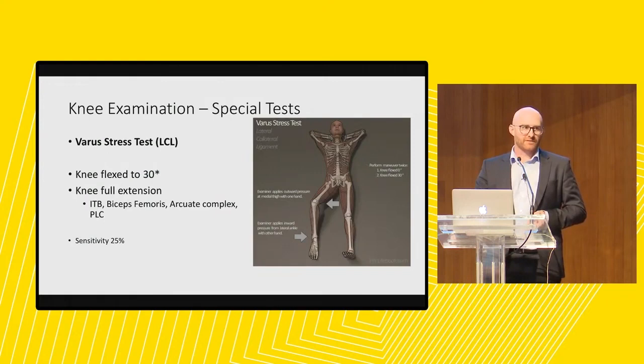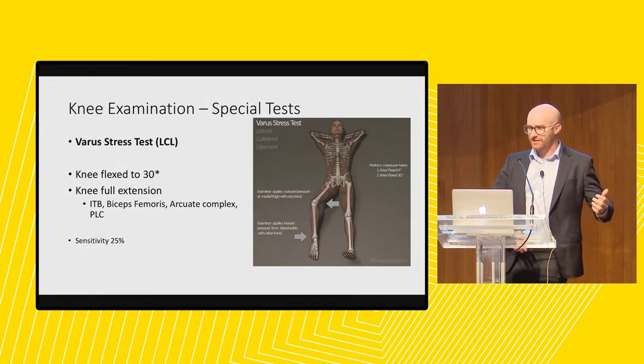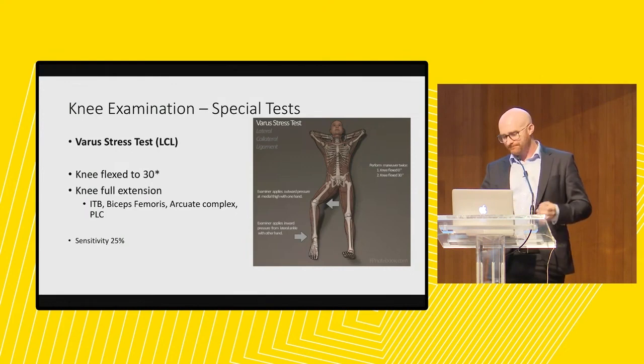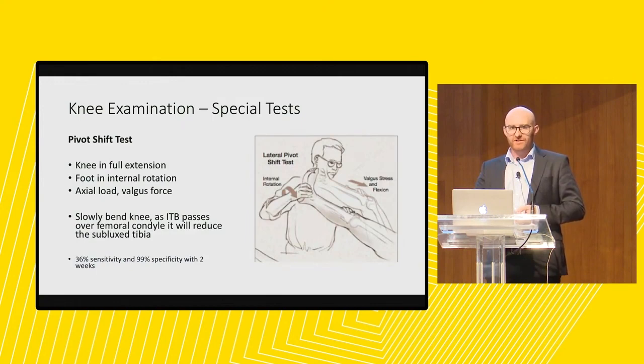The varus stress test is done for everyone, but the number of people with lateral collateral ligament injuries is very low. MCL injuries happen when people get cleaned up from the outside; LCL injuries are much rarer. When there's an associated ACL injury, we always look for associated injuries around the posterolateral corner — uncommon in kids, but worth checking. Again, flex to 30 degrees; doing this in full extension means you're testing the ITB, biceps, arcuate complex and posterolateral corner together, giving no relevant information.